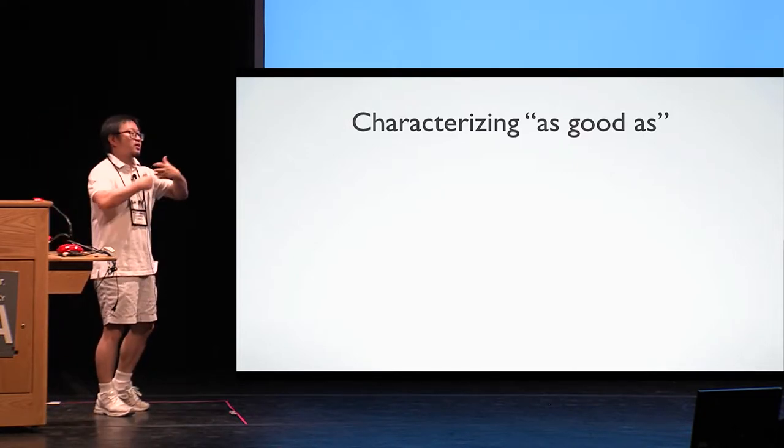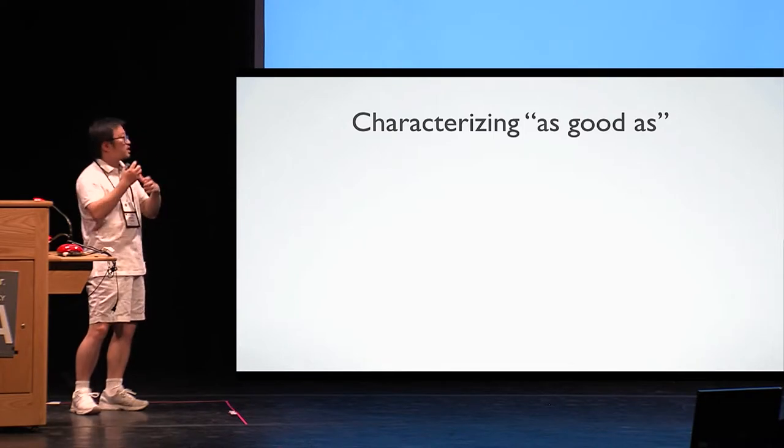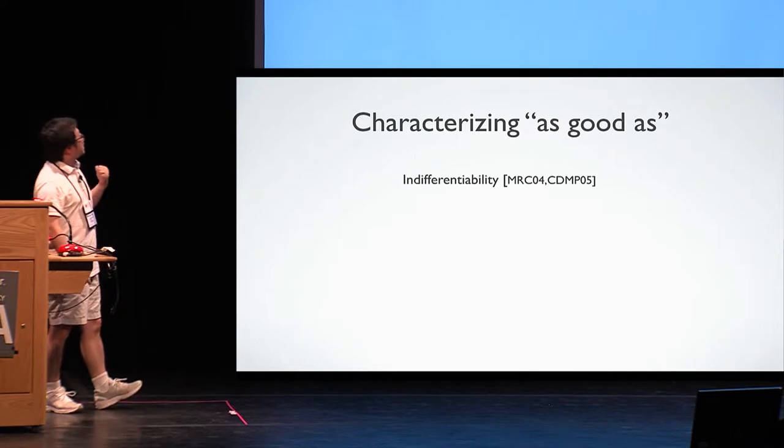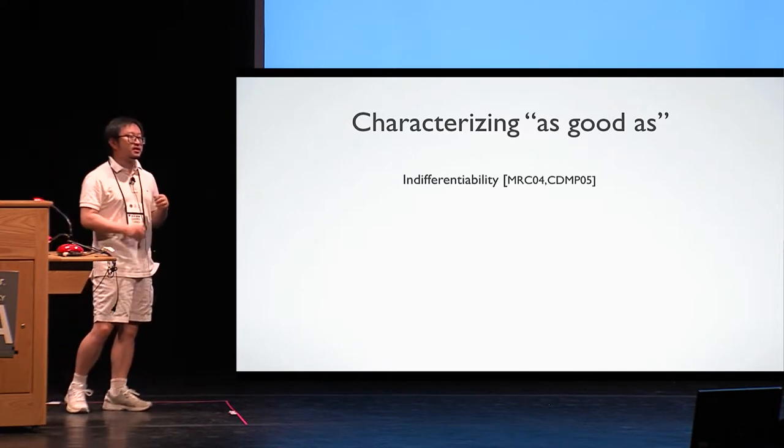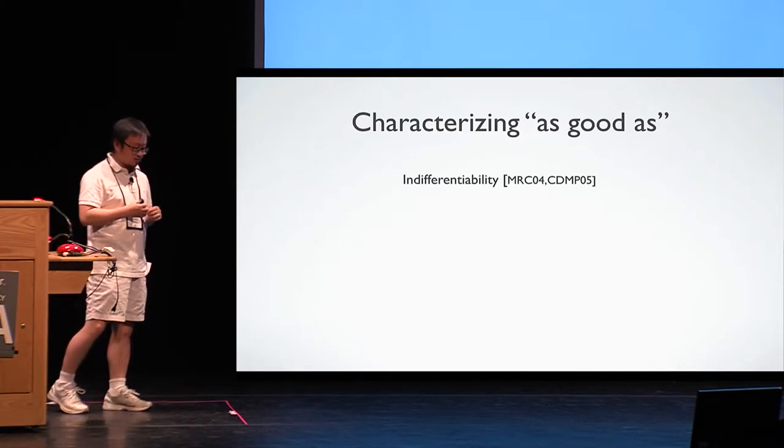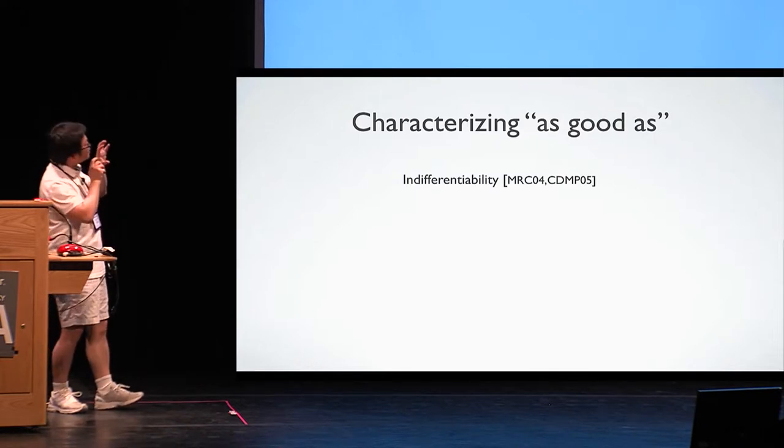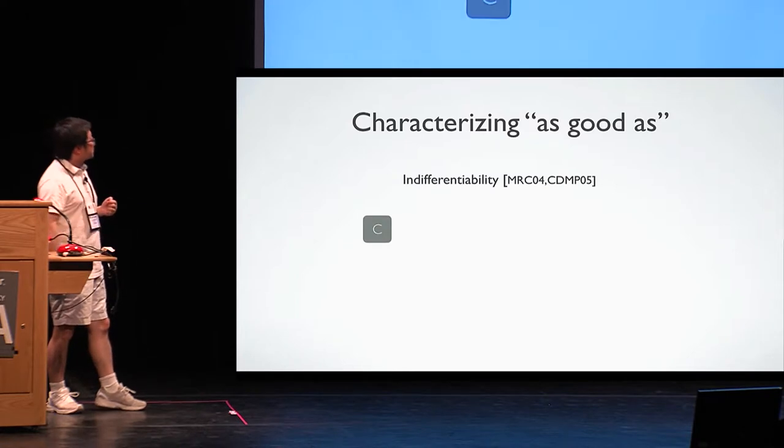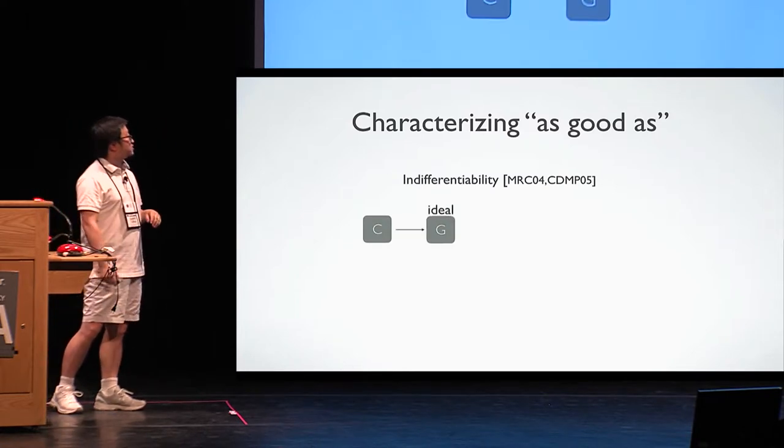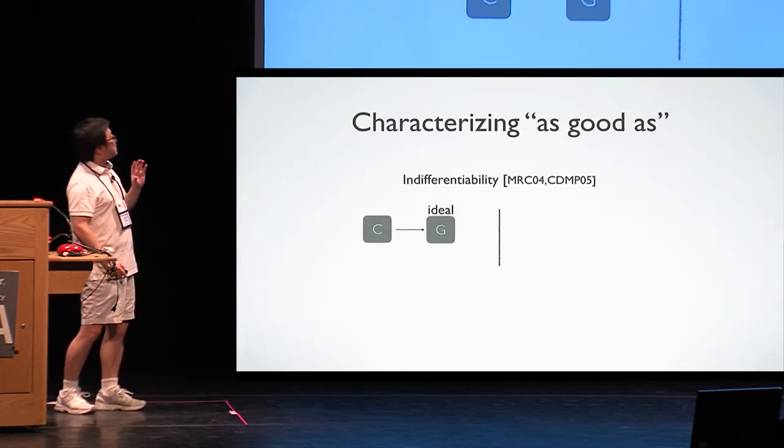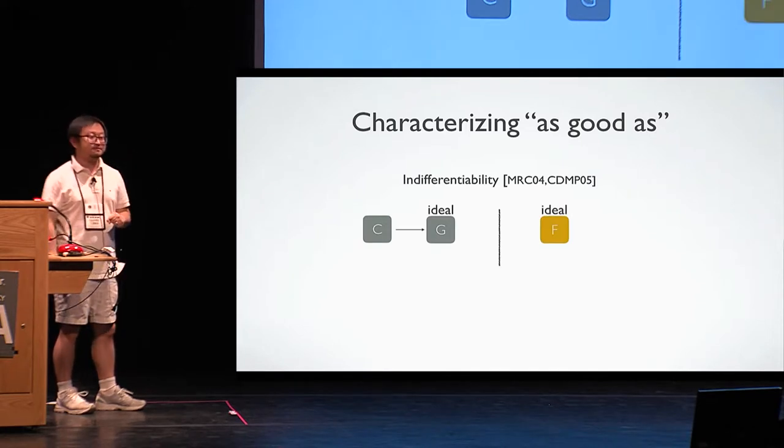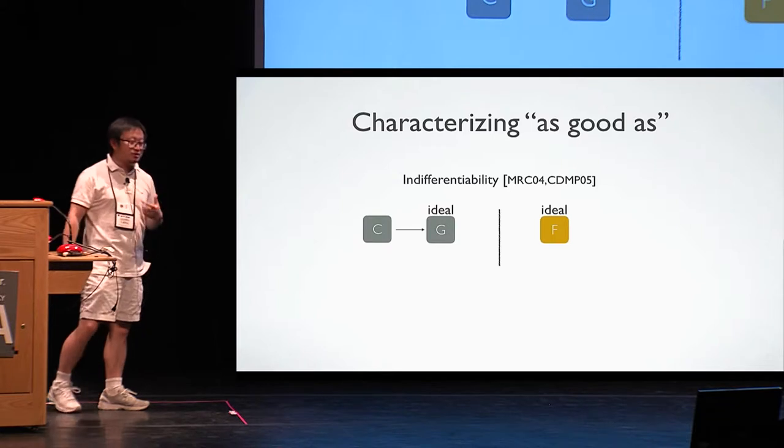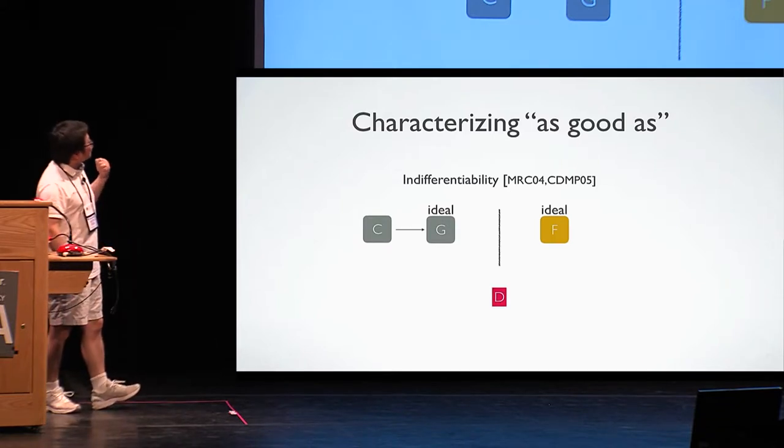So now we are ready to actually consider the formal definition. We want to correct subverted implementation back to a good one, right? So we want to capture as good as. So that's a very nice framework called indifferentiability. Captures the ideal object in cryptography, especially the property of as good as. So how it works? A construction takes the ideal object G, try to mimic another ideal object F. And what do we mean is the construction C is going to be as good as F? It's for any distinguisher, there exists a simulator.